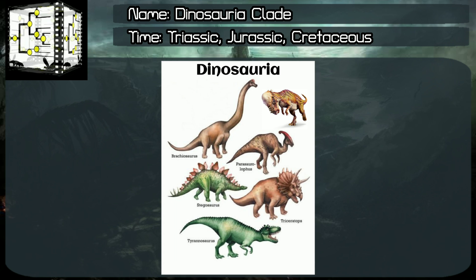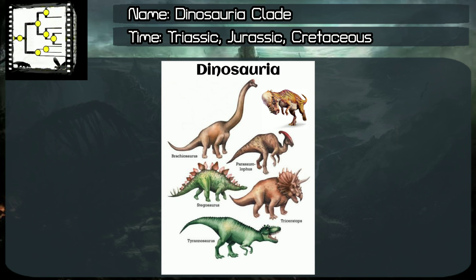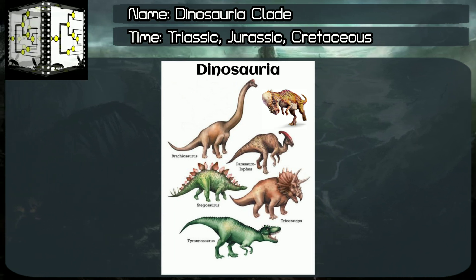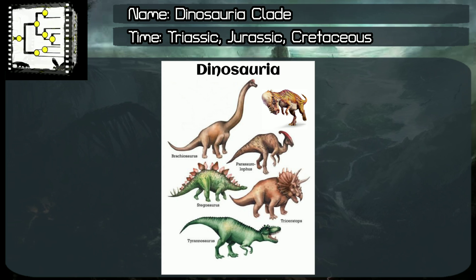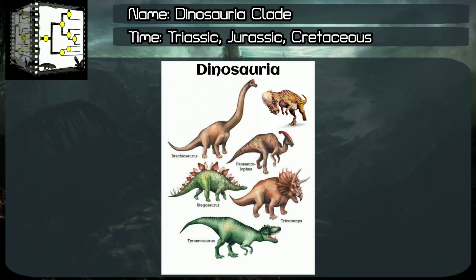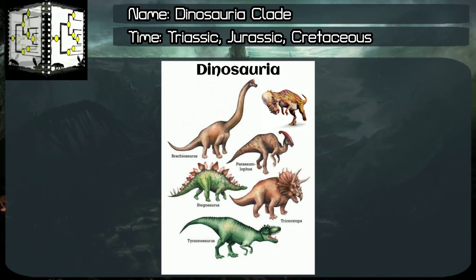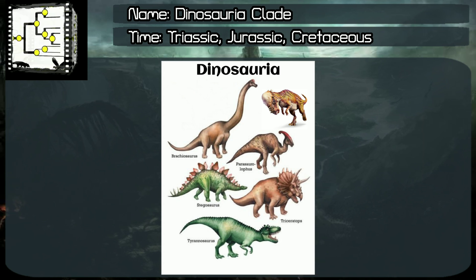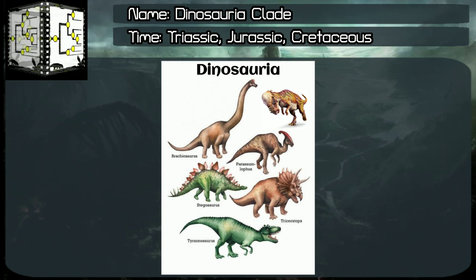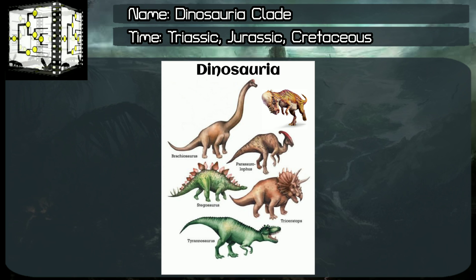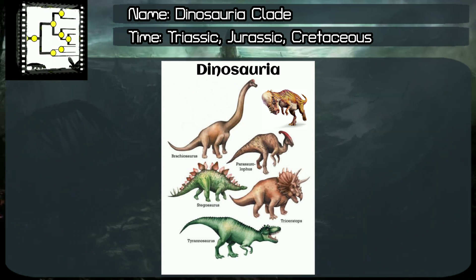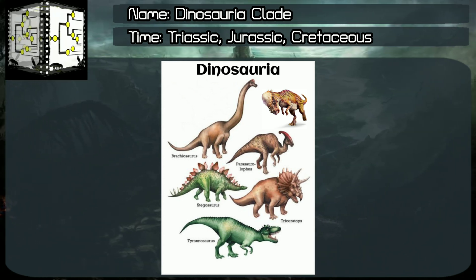All known dinosaurs can be included in the Dinosauria clade. The dinosaurs can be divided into avian dinosaurs and non-avian dinosaurs. The Dinosauria clade was divided into two individual orders: the Saurischian and Ornithischian orders. But today, most paleontologists classify Saurischian as an unranked clade, rather than an order.